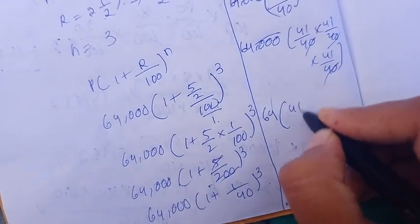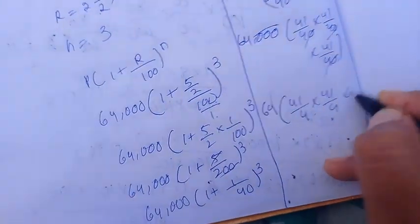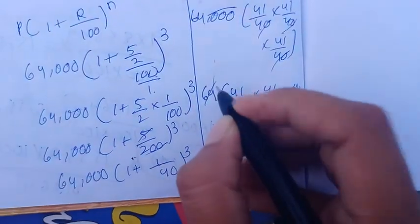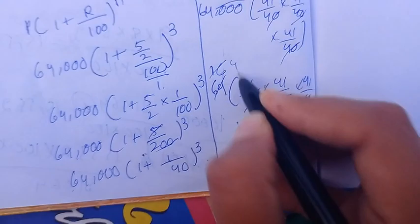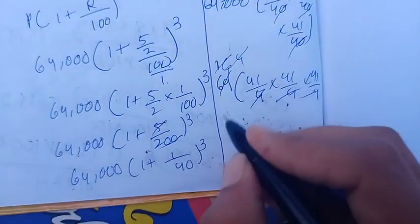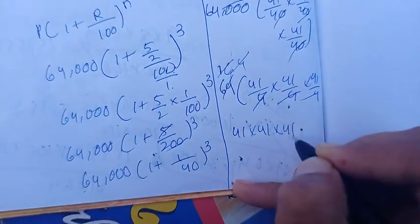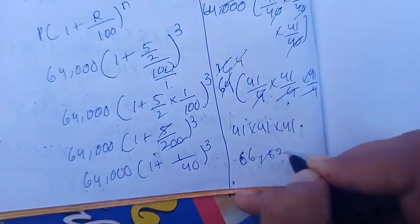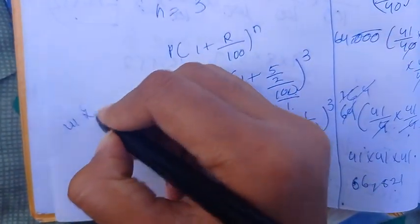Cancelling factors of 40 from 64,000: 64,000 divided by 40 cubed gives us 64 divided by 1, multiplied by 41 cubed. Computing 41 into 41 gives 1,681. Then 1,681 into 41 is calculated step by step to get the final population value.